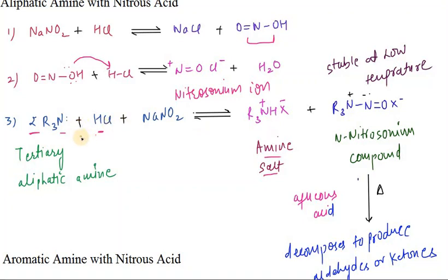First of all, acid-base reaction: one mole will be used in acid-base reaction. We have another mole with NO2+. The nitrosonium ion and R3N will donate electron pair to nitrosonium ion, and this compound will form which is a salt. It forms N-nitrosonium compound that is stable at low temperature.